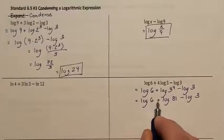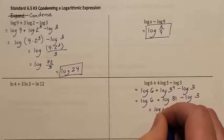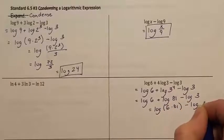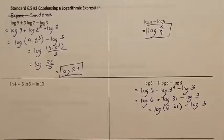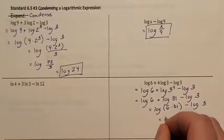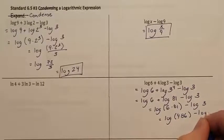I see these being added together. So if we condense these, adding goes to multiply. So this is log of 6 times 81 minus log of 3. What is 6 times 81? 6 times 81 is 486. So this is log of 486 minus log 3.